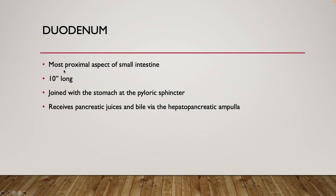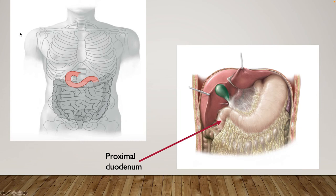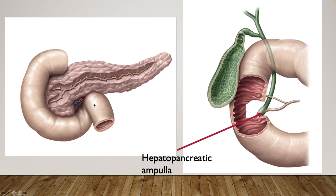The duodenum is our first, most proximal part — about 10 inches long — connected to the stomach at the pyloric sphincter. It is divided into roughly four parts. It receives products from the stomach, products from the pancreas, and ultimately from the gallbladder — which is bile. You can see the duodenum highlighted in the left image as a short structure divided into four parts. On the right, you can see parts one and two, and also the pancreas with the pancreatic duct traveling down to empty its contents into the duodenum.